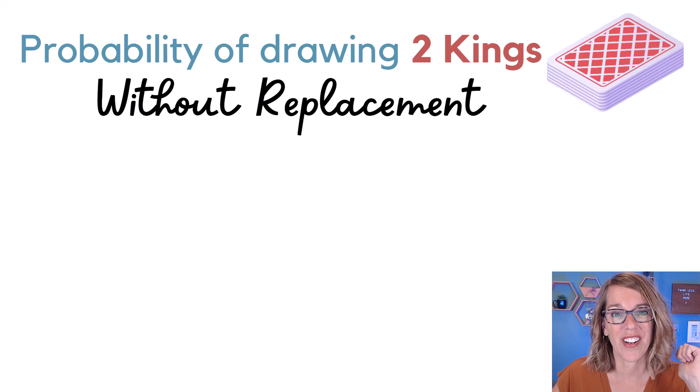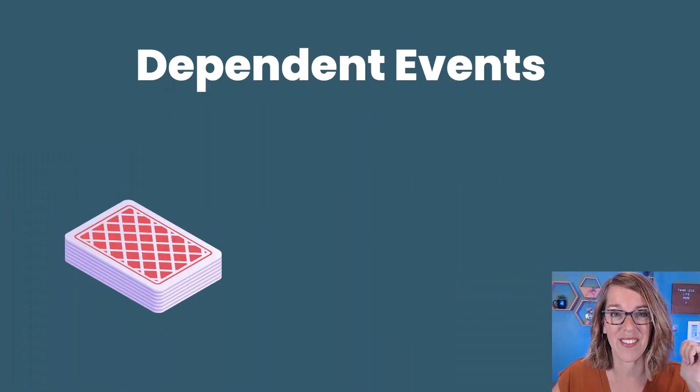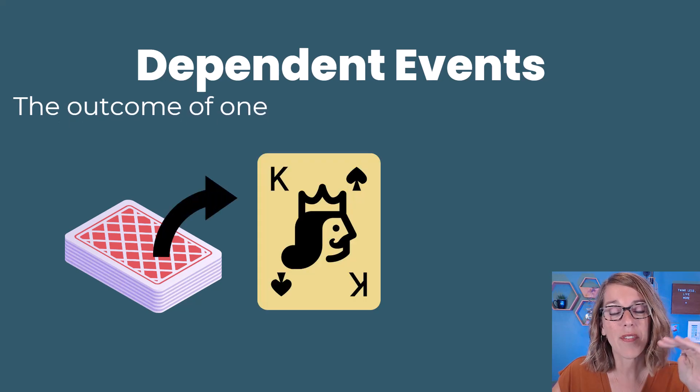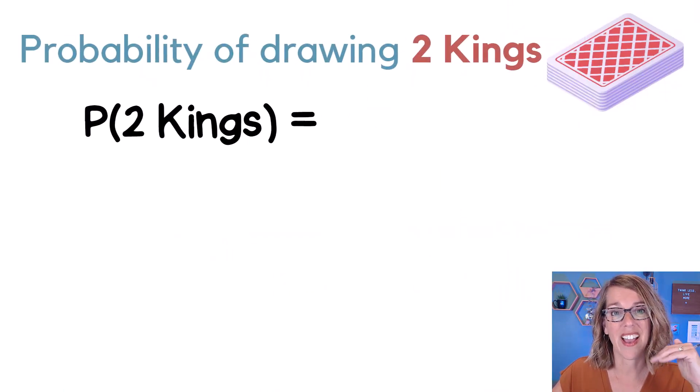Because these card draws are done without replacement, it means that these are dependent events. So whatever we get for that first draw affects what we get and the probability for the second draw. Let's go ahead and work through the math.